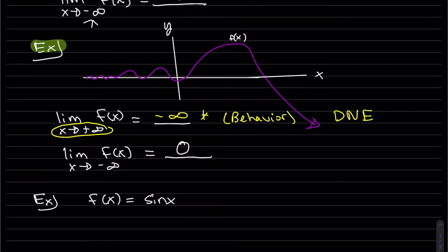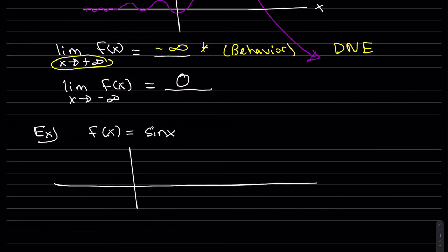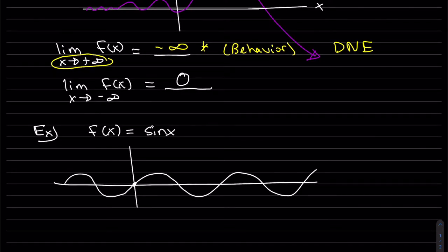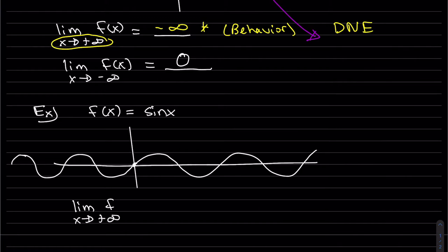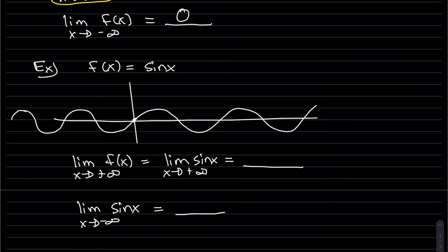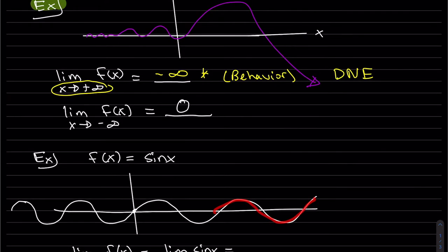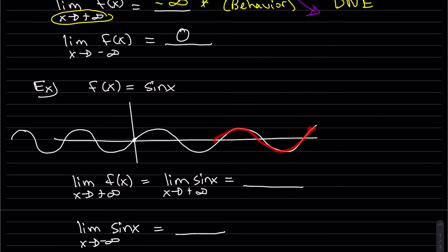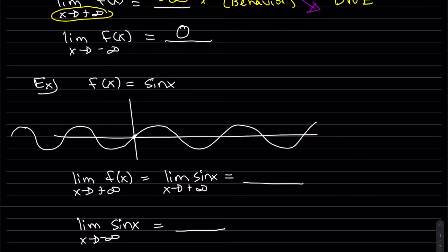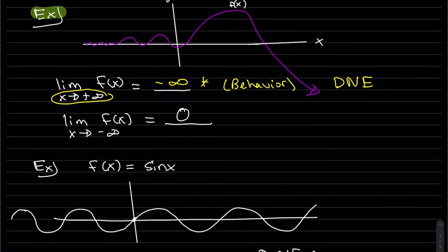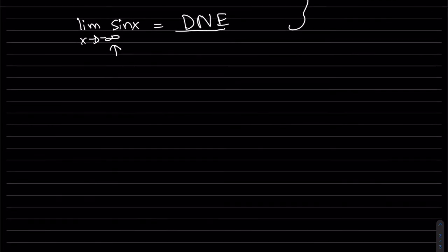Let's write out a function — sine of x. We know if you plug in zero you get zero, it repeats and goes on forever. We can write the limit as x approaches positive infinity of sine of x. Since this oscillation is not getting any smaller like in the previous problem, it keeps oscillating and doesn't hit one value. So this is DNE because it's not approaching one number — it's approaching many numbers.